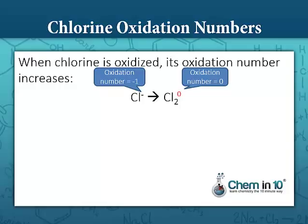We have to balance this reaction, so we're going to need two chloride ions on the left, and we need to balance the charge by adding two electrons to the right.